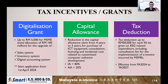Previously you could claim capital allowances over four years, but now it has been shortened to three years. In the first year you can claim 40%, plus 20% the following years, so the time to claim back the capital costs has been shortened.